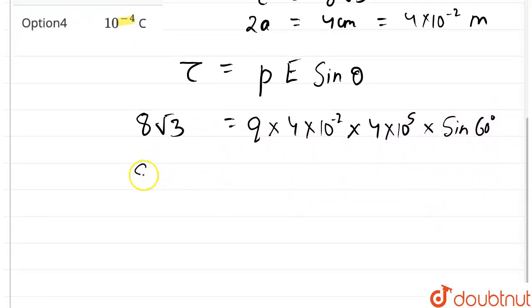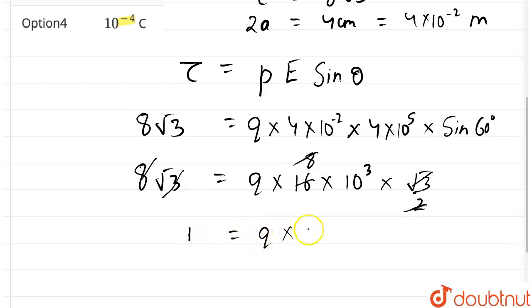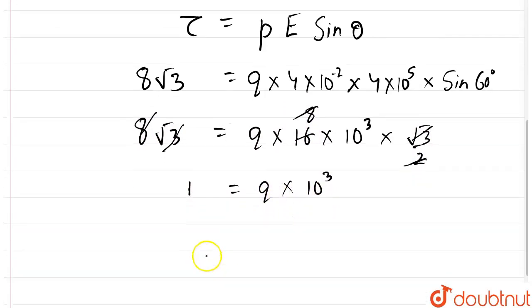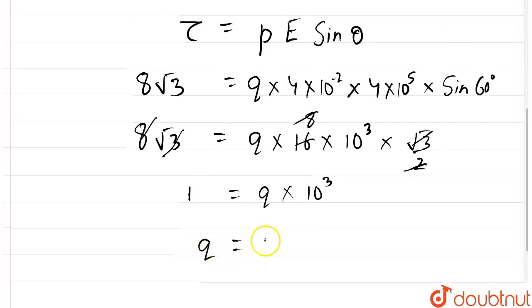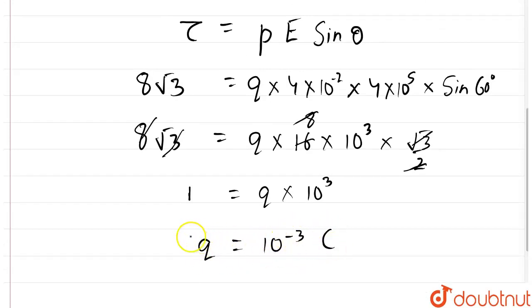Now, we get 8√3 = Q × 16 × 10^3 × sine of 60 degrees which is √3/2. √3 will get cancelled out from both sides and 2×8 is equal to 16, 8 will also get cancelled out. So, we are left with 1 = Q × 10^3 or Q = 10^-3 coulombs. So, this is our answer.